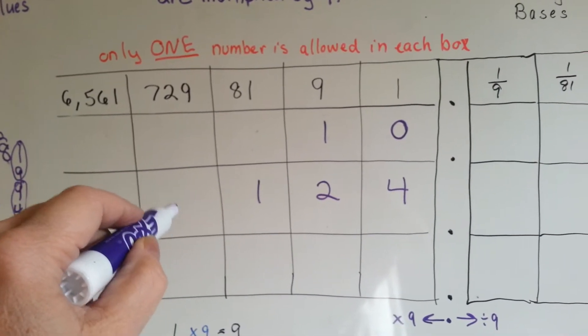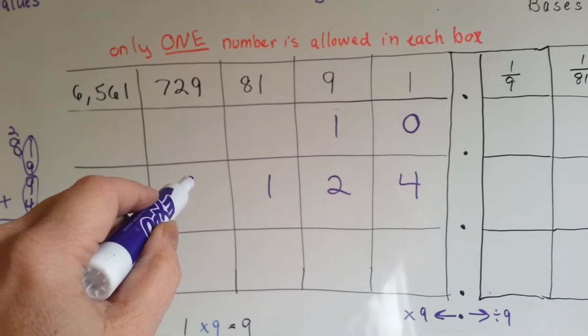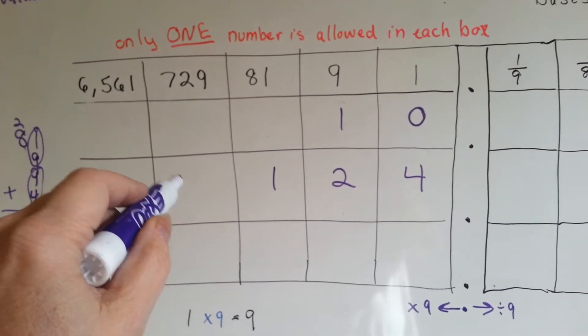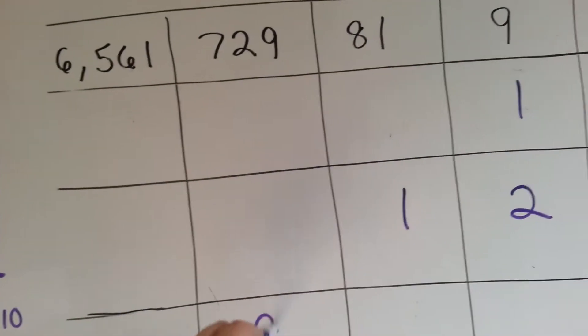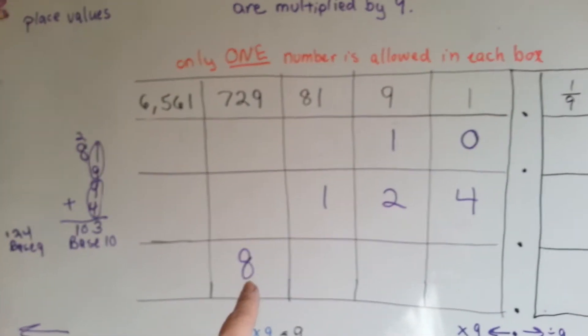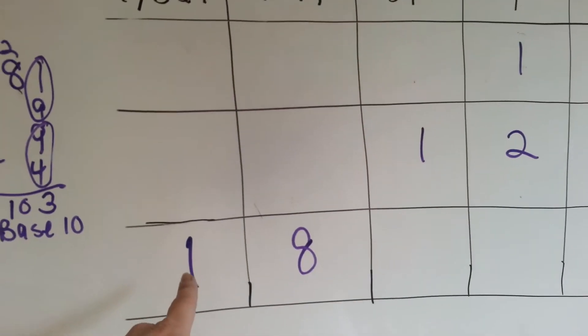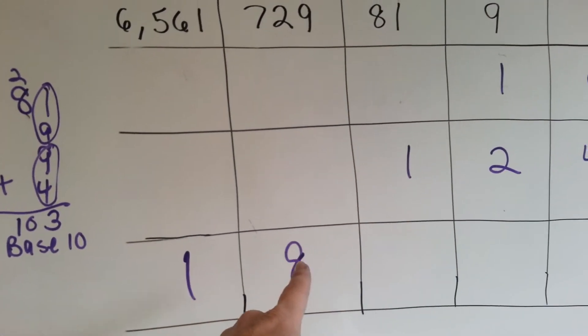You put a numeral here. That means you have 729s. So you could have 8 of these in the 729 column. The minute you got to 9, you would have to say that it goes to this column, and that would be a 0.